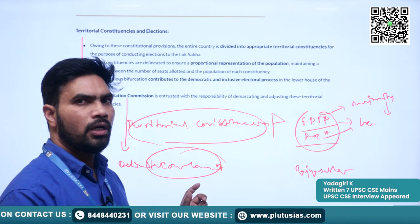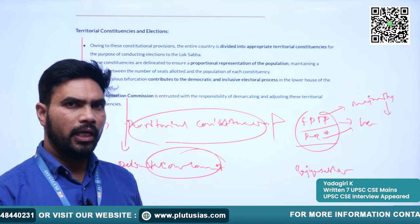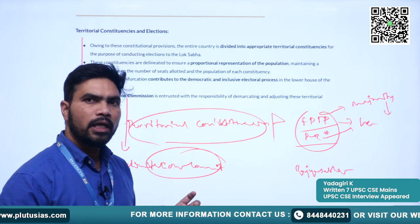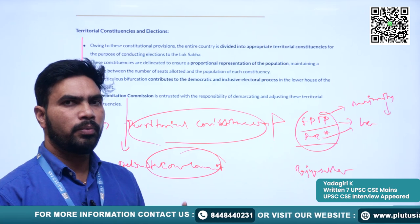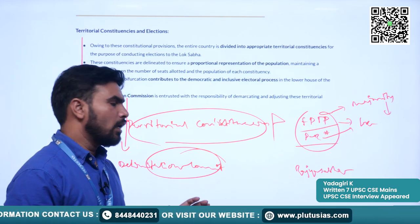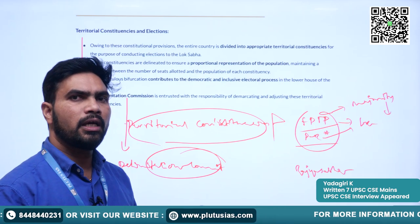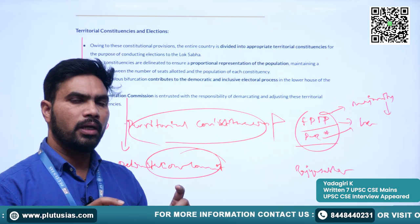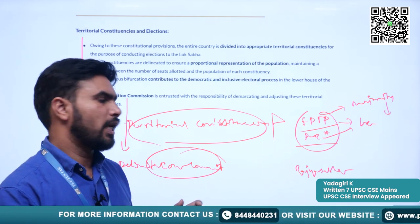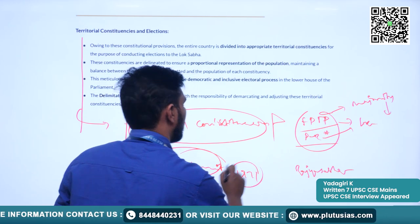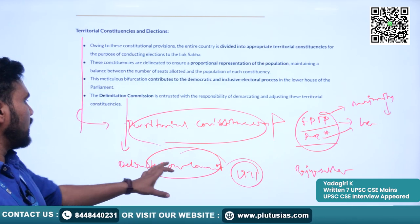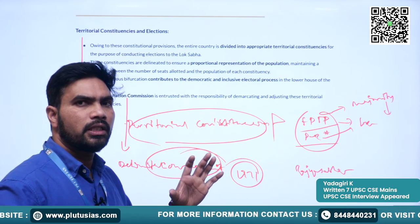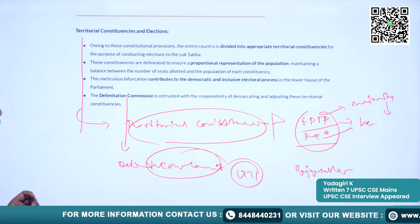There are some amendments regarding this because there is an inequality in population growth between South India and North India, which may lead to asynchronous representation in Parliament. Because of that reason, there is a hold on the number of representatives from each state since the 1971 census. The delimitation commission holds the key when it comes to forming and adjusting territorial constituencies.